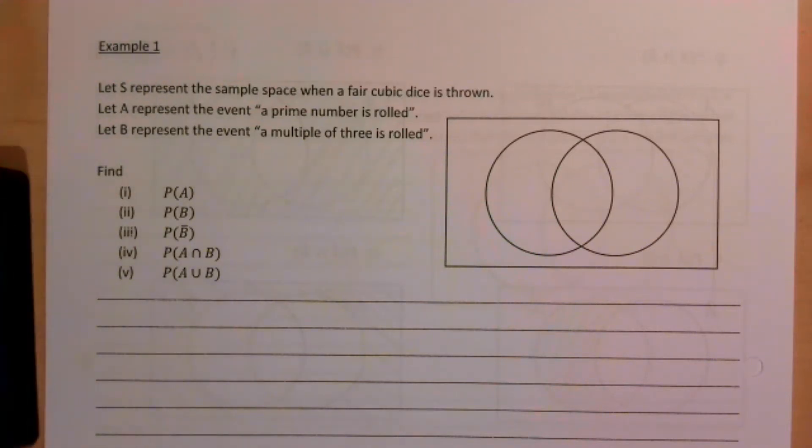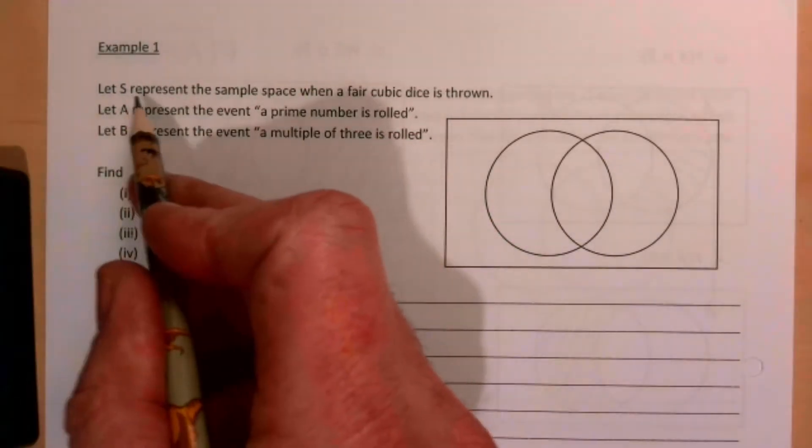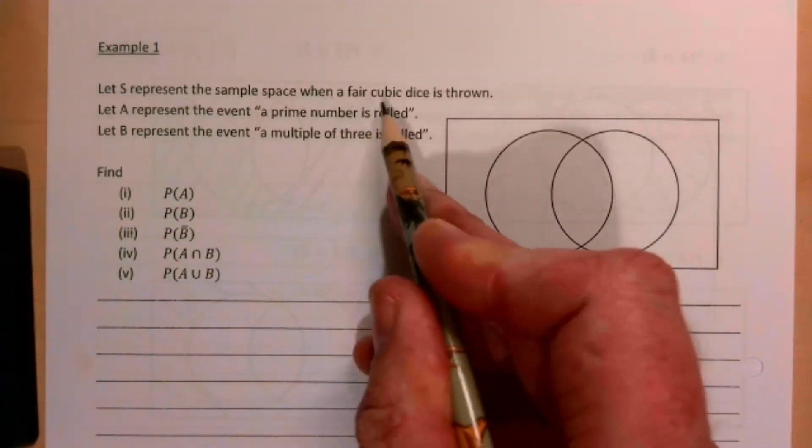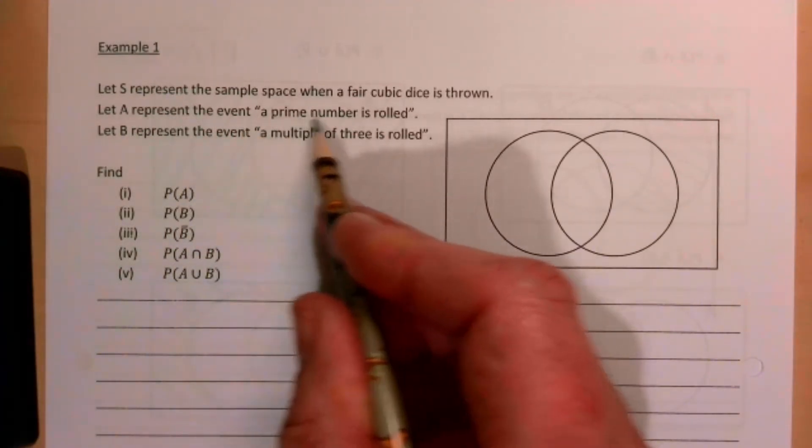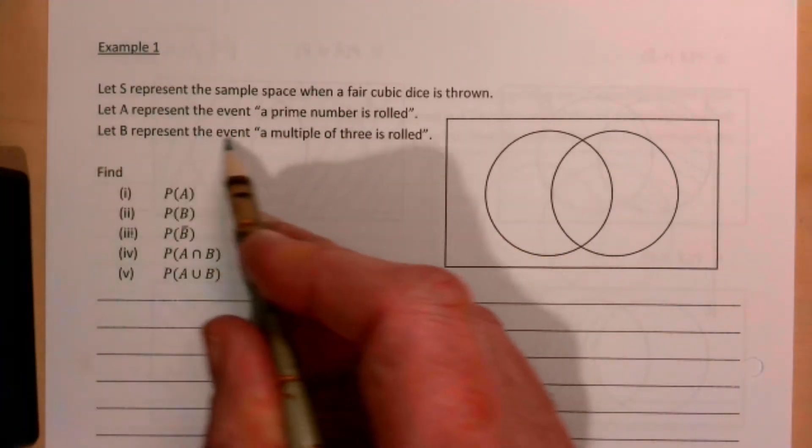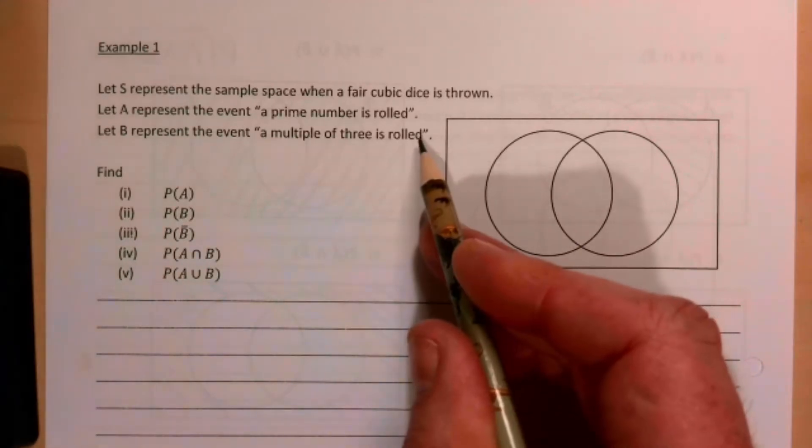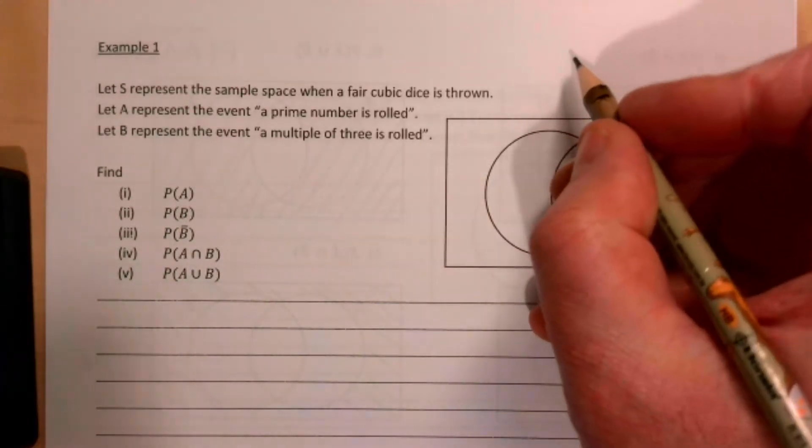This is S Stats, we're in Unit 4 Probability, and we're at 4.3, Example 1. It says let S represent the sample space when a fair dice is thrown. Let A represent the event a prime number is rolled. Let B represent the event that a multiple of three is rolled.